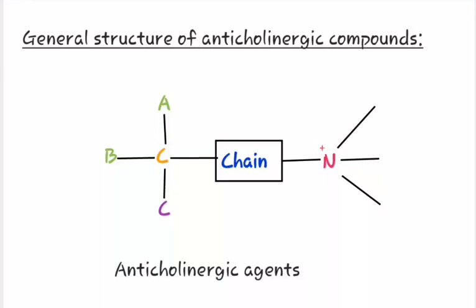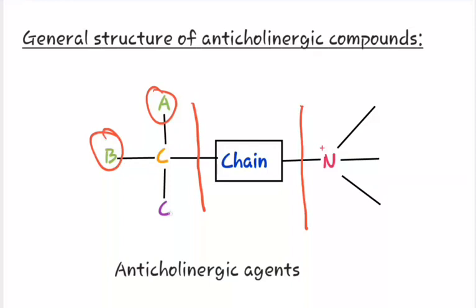Anti-cholinergic compounds can be divided into four parts. First is the cationic head, then the second is the chain portion, then the third is A and B substituents, and the fourth is the C substituent.